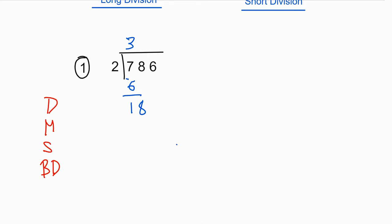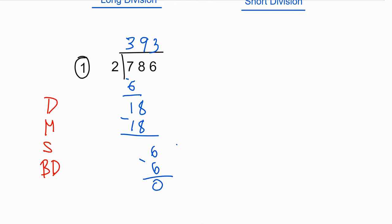2 goes into 18 nine times. 9 times 2 is 18. Subtracting that you have zero. Bring down the next number, which is 6. How many times does 2 go into 6? You have 3. 3 times 2 is 6. Subtracting that you have zero, so the answer is 393.